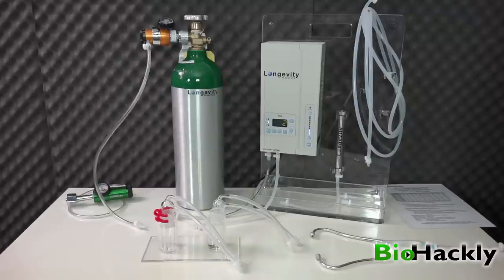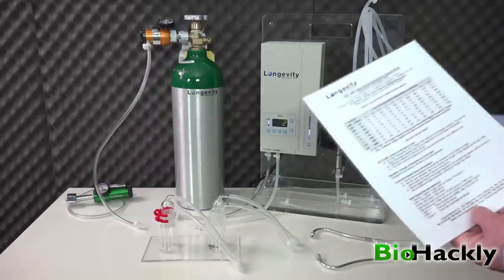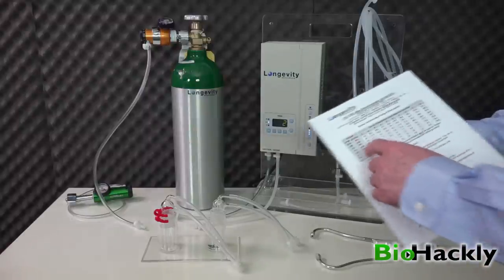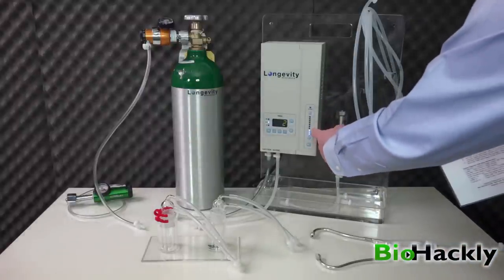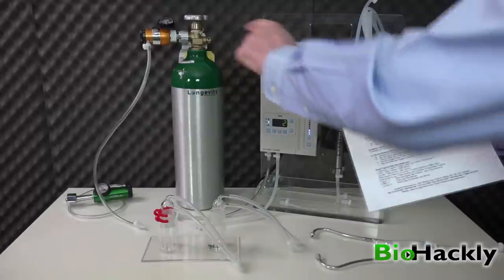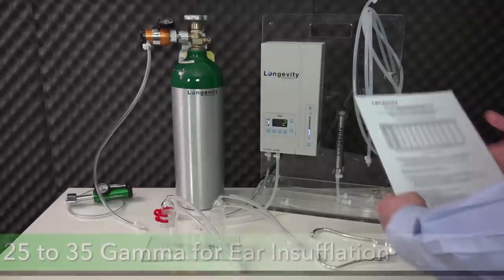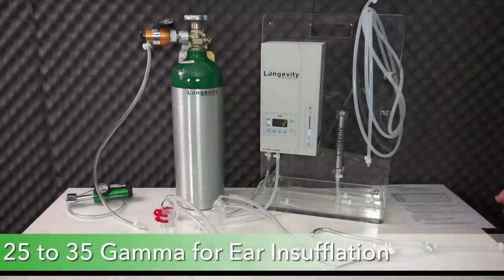The reason for that is Dr. Frank Schellenberger's protocol for ear insufflation is generally done at 25 to 35 gamma for two to three minutes. I have my ozone concentration set at three. Looking at the chart, at setting three with my oxygen regulator at one-sixteenth, I get 28.9 gamma, right in the middle of Dr. Schellenberger's suggested 25 to 35 range.